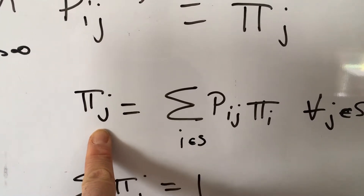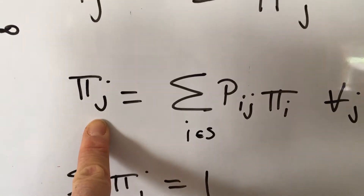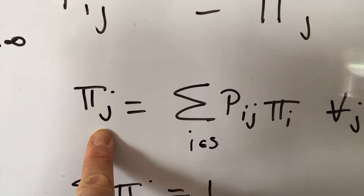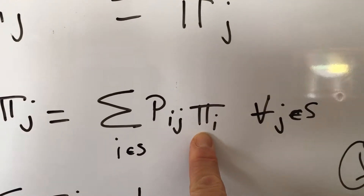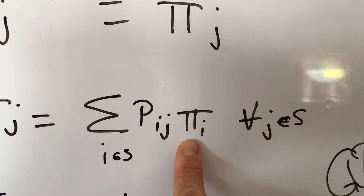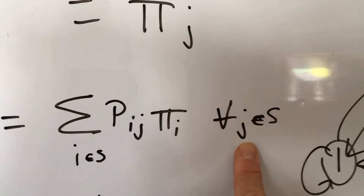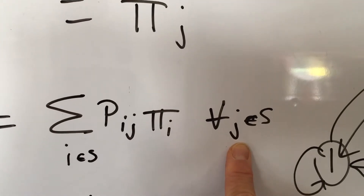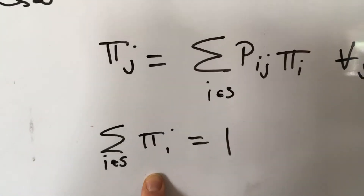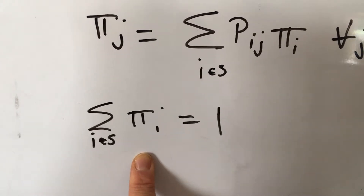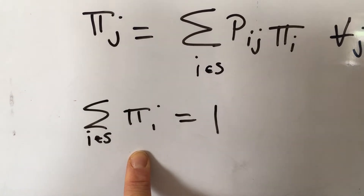For each landing state, the limiting probability — the long-run probability that you are in state j — is the sum of the long-run probability of state i, for all states that go into state j, times the single-step probability of going from i to j, for all possible states. The other equation we need is total probability: the sum of all long-run probabilities of all states must sum to one.